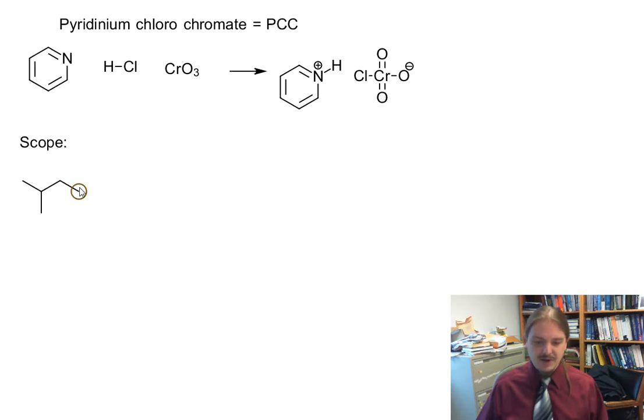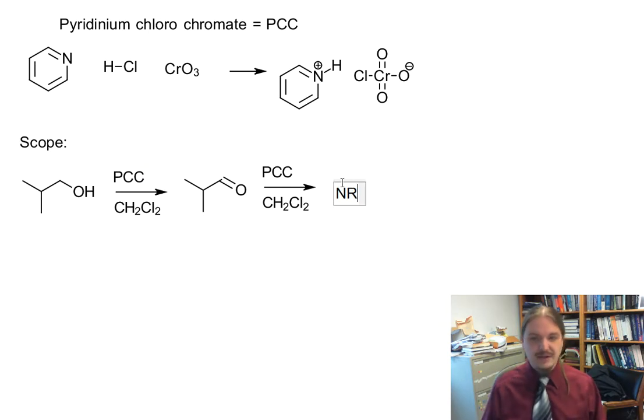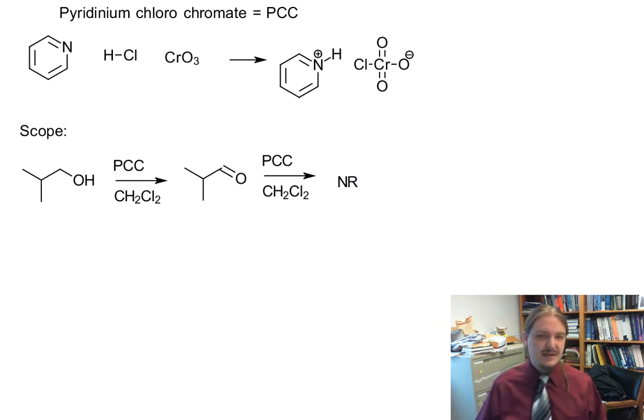If we have a primary alcohol, we'll do something a little different than my first example there. So PCC, a common solvent for PCC is dichloromethane, though other solvents are certainly used. And so this leads to the aldehyde, and it stops. If you have a molecule that has an aldehyde in it and you treat it with PCC, you are going to get no reaction. And that's good, because you might want to stop at that aldehyde.